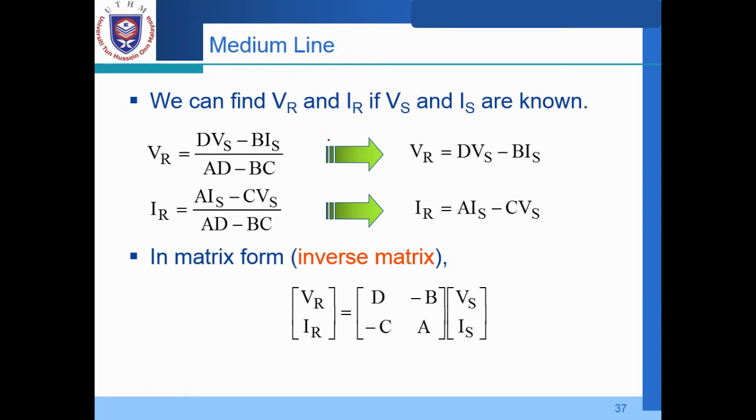So we can find VR and IR if VS and IS are known. So VR, try to arrange the equation in terms of this parameter A, B, C, D. We may get VR in terms of VS and IS. Similarly for IR. We arrange the equation. So you may get the relationship in terms of IS and VS.